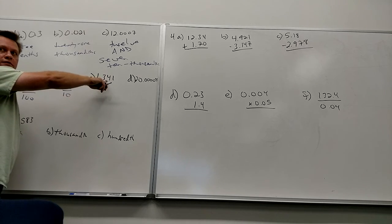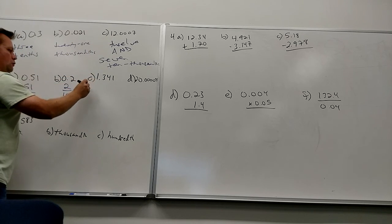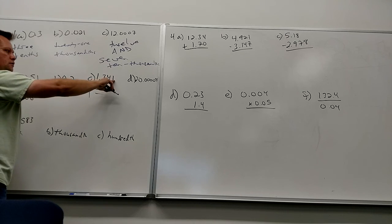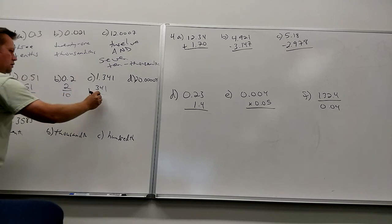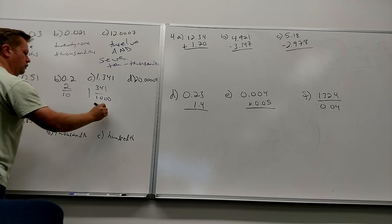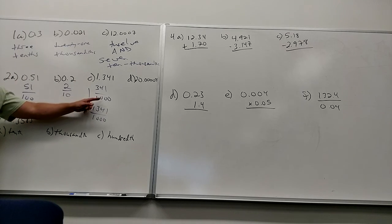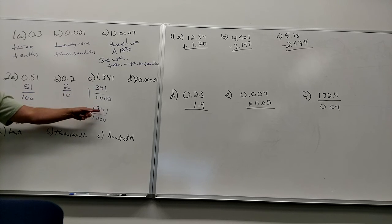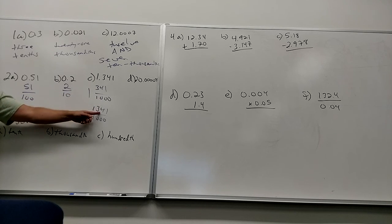Now, there are two ways to do this. You can say one and three hundred forty-one thousandths. But it's the same thing as thirteen forty-one thousandths. Those are the same. Because how do you make this? A thousand times one is a thousand, plus three forty-one is thirteen forty-one. These are the same thing, just a mixed number version and an improper fraction version.